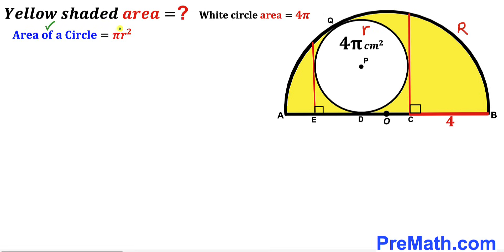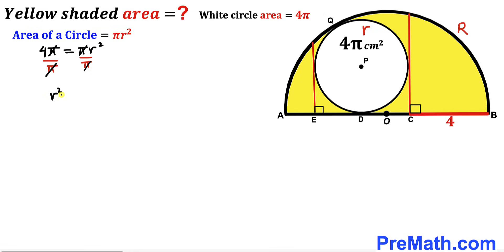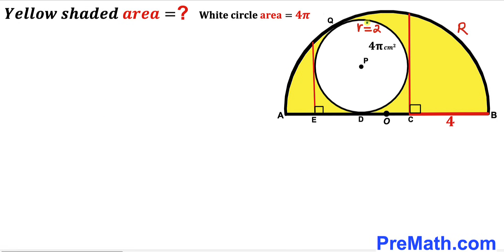Recall the area of a circle: Area = πr². The area of the white circle is 4π, so 4π = πr². Dividing both sides by π gives r² = 4, and taking the square root gives lowercase r = 2 cm.